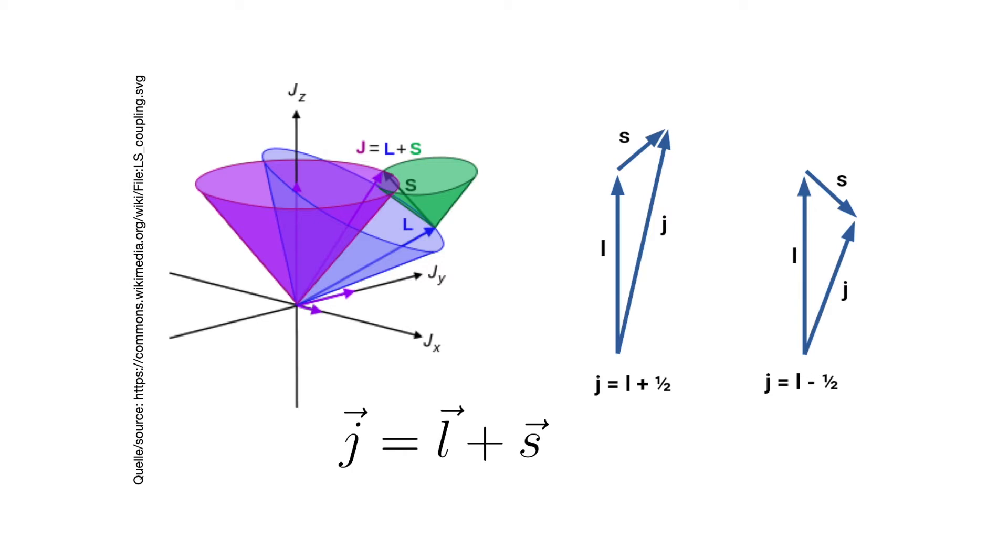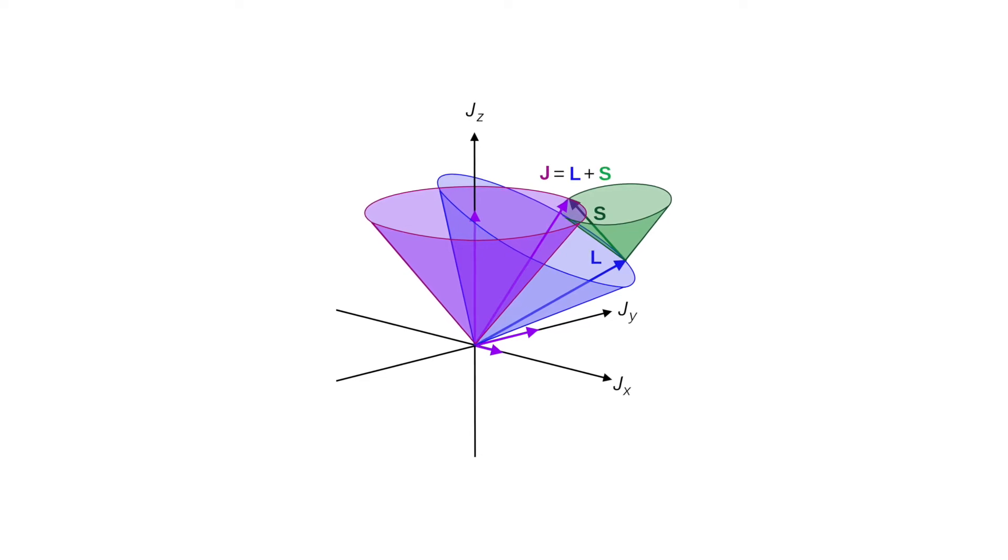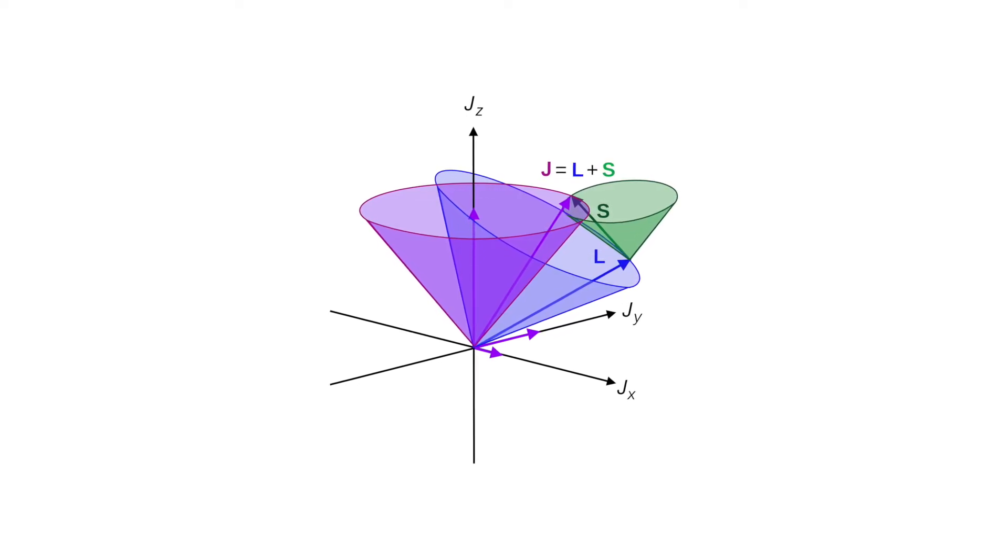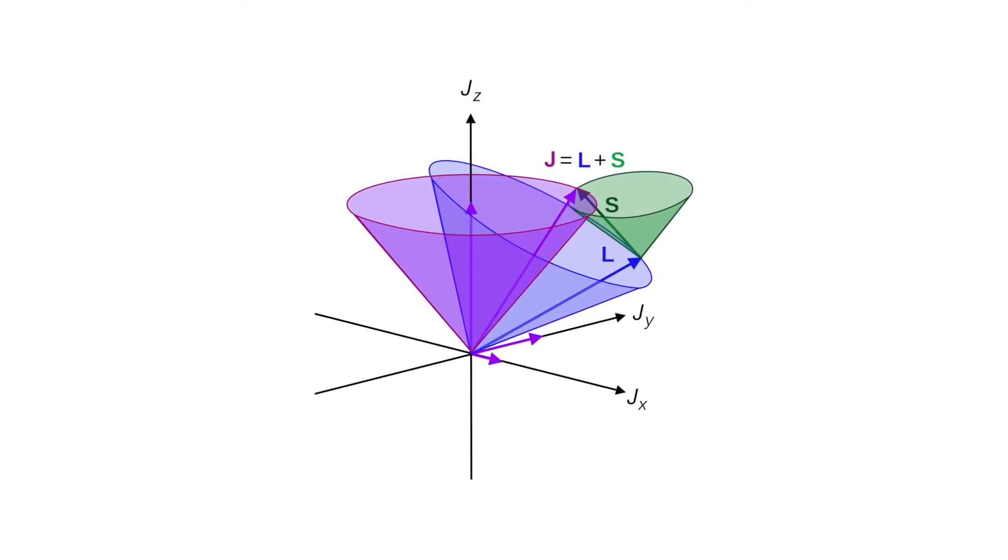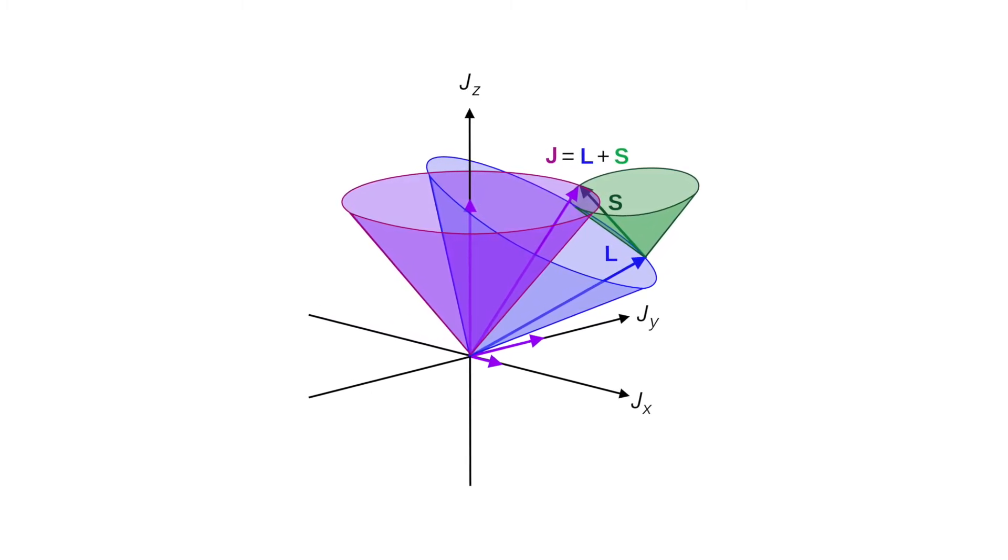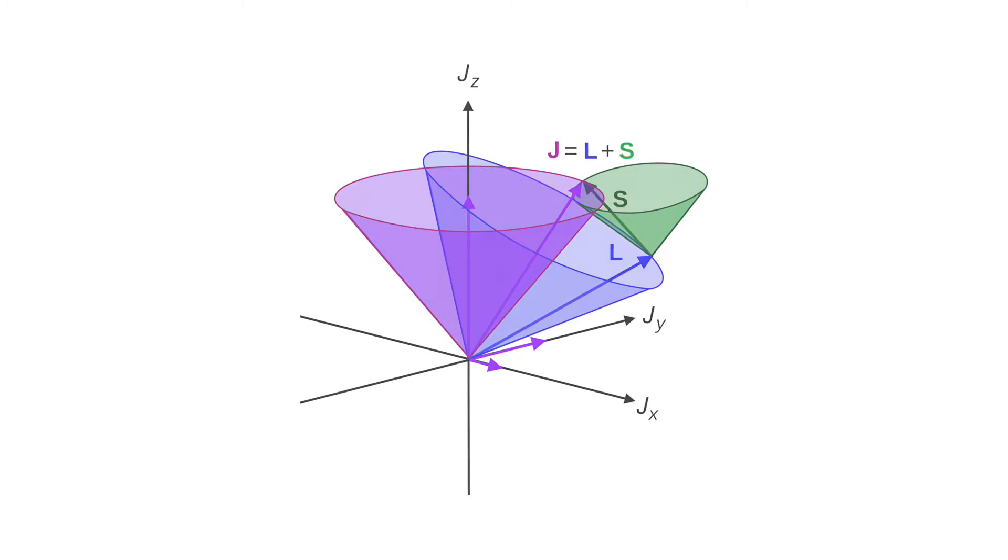The spin-orbit coupling energy grows fast with increasing nuclear charge number. For a comparatively light atom like sodium, the spin-orbit interaction can be considered a slight disturbance. In this case, the fine structure splitting can be explained by the LS coupling. Instead of the individual angular momenta, the total orbital angular momentum capital L, the total angular momentum of spin capital S and the total angular momentum capital J are used.